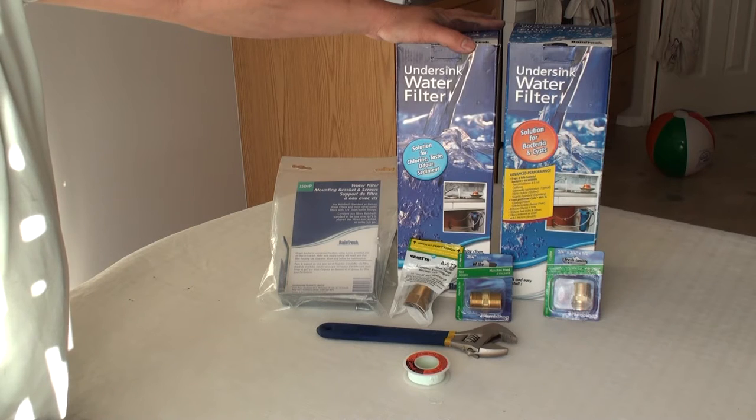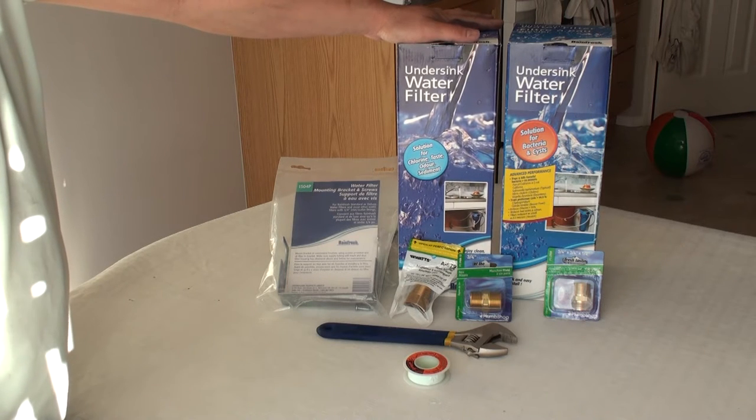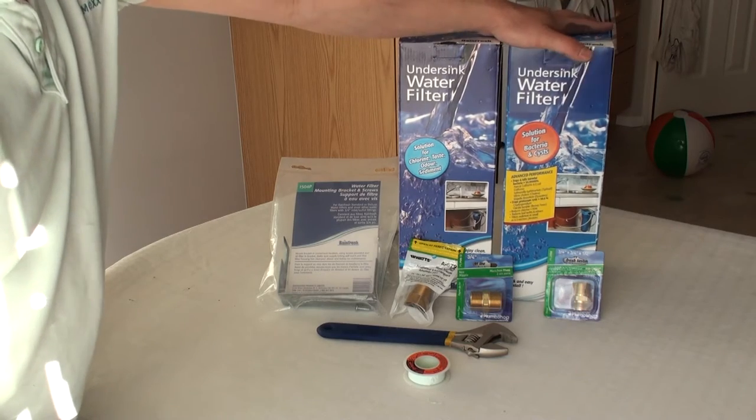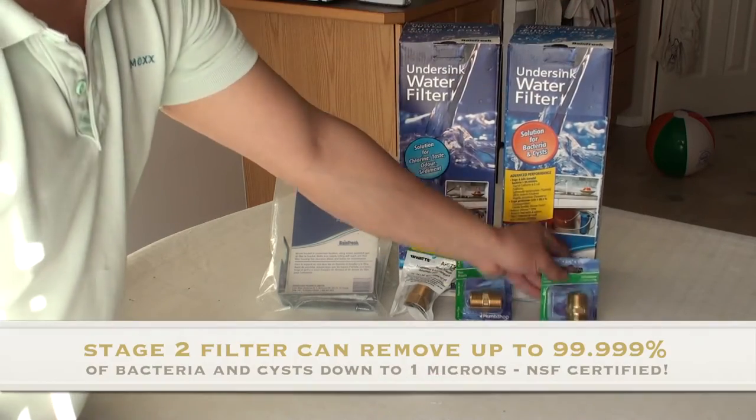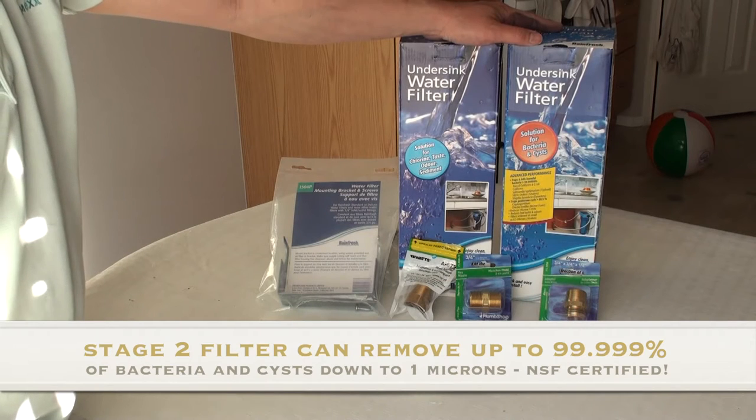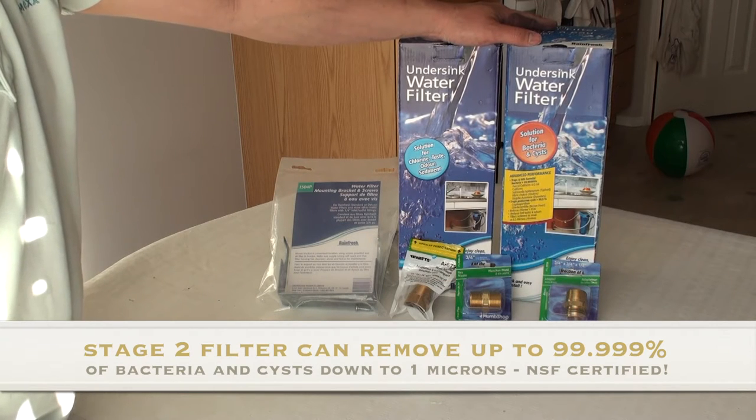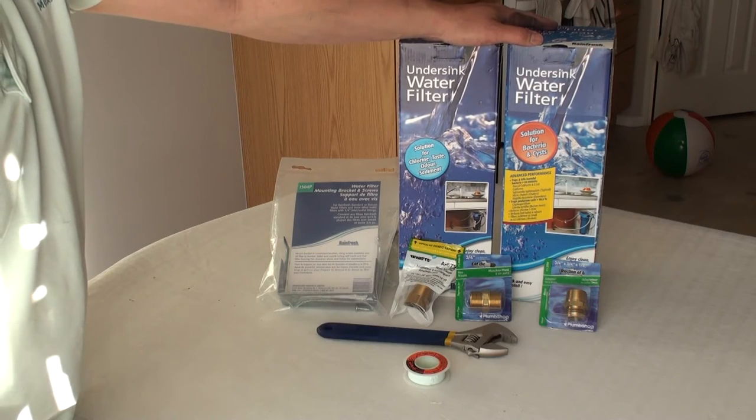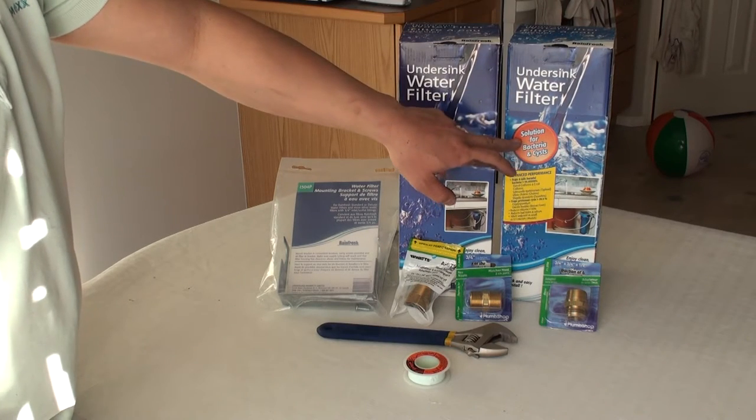The whole idea behind this is to pre-filter the water, make sure we remove all the coarse and fine sediments before it hits the secondary stage filter that will employ the use of a ceramic core filter that can filter down to one micron. Most bacteria fall in the two to two and a half micron range.